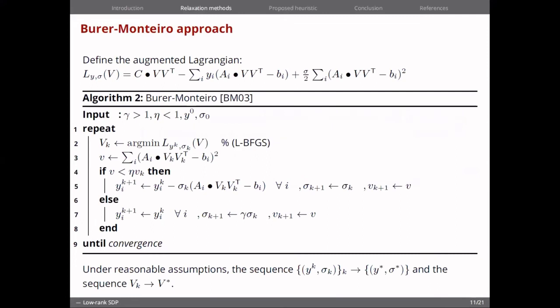To handle this, the authors proposed the augmented Lagrangian method. And they showed that for specific y and sigma star, the local minimum of this augmented Lagrangian method, of this augmented Lagrangian function, is going to be the same as the solution in the problem formulation that we have just seen.